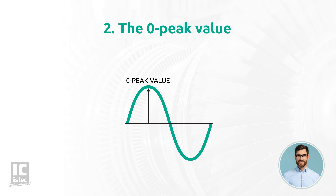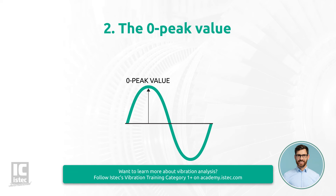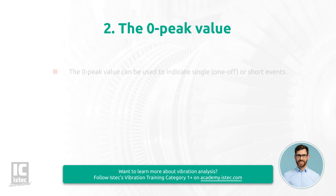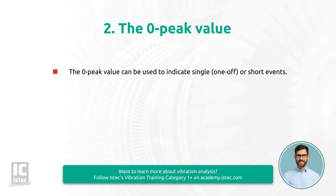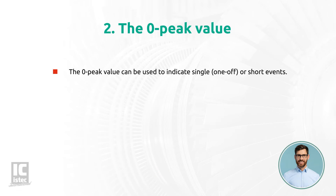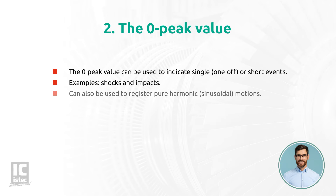The zero-peak value for a sinusoidal signal is half the value of a peak-to-peak value. This value is used when the peak-to-peak value has no added value for the signal evaluation. The zero-peak value can be used to indicate single, one-off, or short events such as shocks and impacts. This value can also be used to register pure harmonic sinusoidal motions.